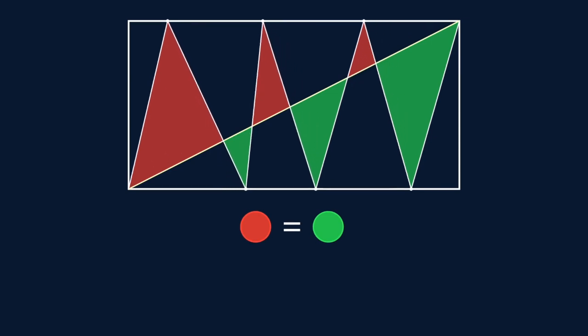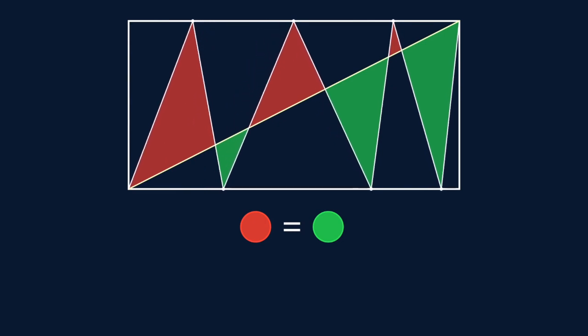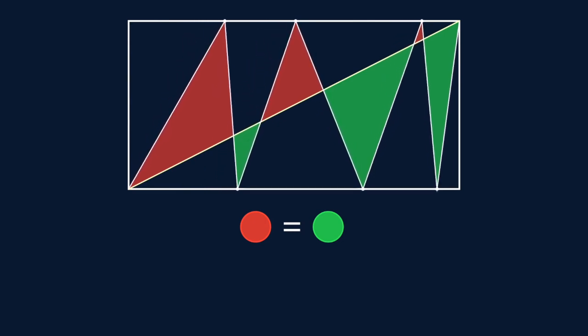And we can move around the points and we can see that red is always equal to green because this proof will always hold true.